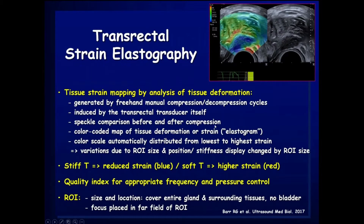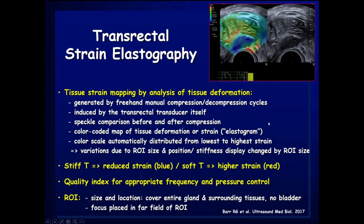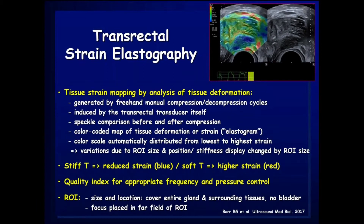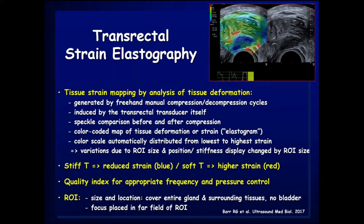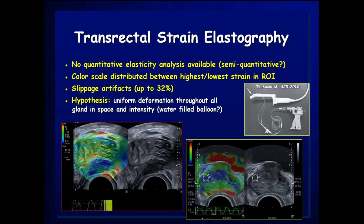For transrectal strain elastography, tissue strain mapping is obtained by analysis of tissue deformation. The machine performs speckle tracking comparison before and after compression. Stiff tissue shows reduced strain and is coded in blue; soft tissue exhibits higher strain and is coded in red — the opposite of shear wave elastography. It is important to keep in mind the quality index and the position and size of the region of interest.